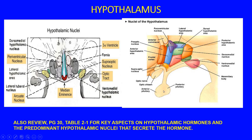You can also see the optic chiasm with optic nerve input being split, the mammillary body, ventromedial nuclei, posterior and anterior hypothalamic nuclei, preoptic nucleus, and paraventricular nucleus. You need to know these. A useful tool is page 30 in your text, Table 2.2-1, for key aspects of hypothalamic hormones and the predominant hypothalamic nuclei that secrete them.